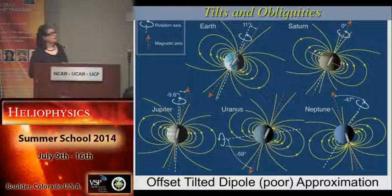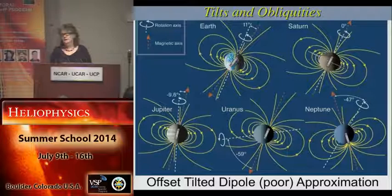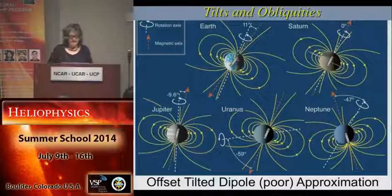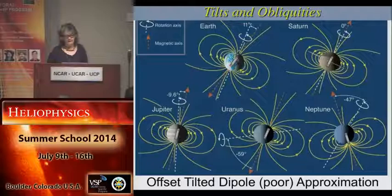When we look at Uranus and Neptune, the offset tilted dipolar approximation is very poor — it's a highly non-dipolar, complicated magnetic field. And of course Uranus is tipped on its side, so huge seasonal effects. These magnetospheres are much more complicated, and sadly we know very little about them.